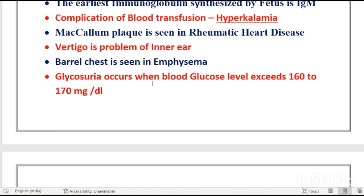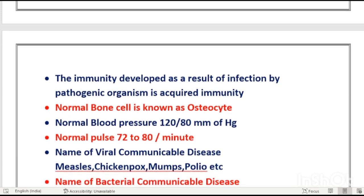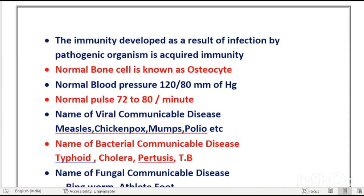Glycosuria occurs when blood glucose level exceeds 160 to 170 mg/dL — at that point glucose starts appearing in the urine. Normal blood glucose is 80 to 120 mg/dL, and a patient is considered diabetic at 140–150. For urine sugar testing, the Benedict test is used, and for urine acetone, the Rothera test is used.